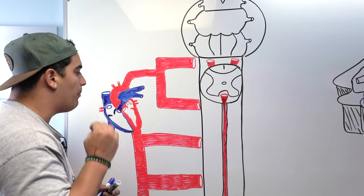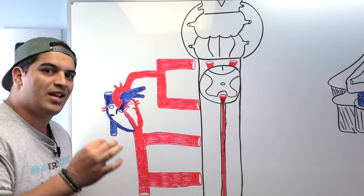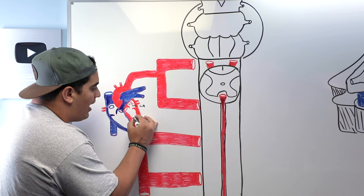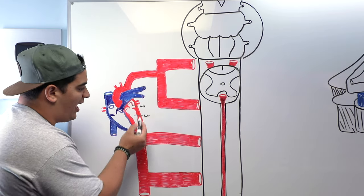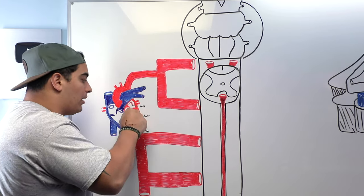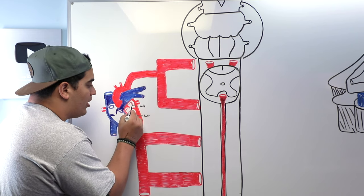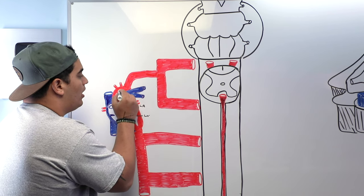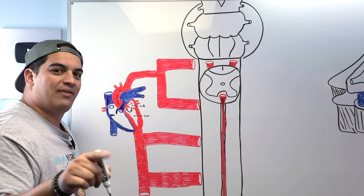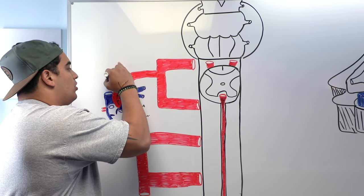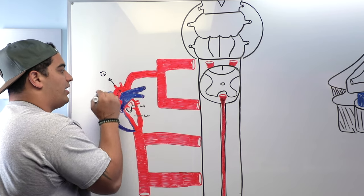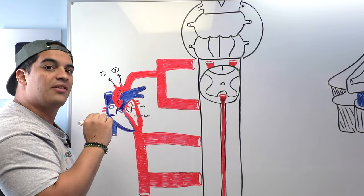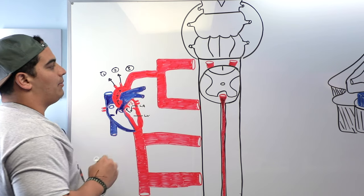Let's start with our pump — the left side of the heart, that systemic pump. We have our left atrium, then our left ventricle. That thick left ventricle is going to pump blood up into the aorta. We go up the ascending aorta into the aortic arch. The three vessels coming off the aortic arch are the brachiocephalic artery, the left common carotid, and the left subclavian artery.